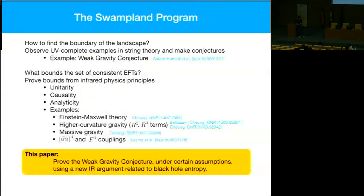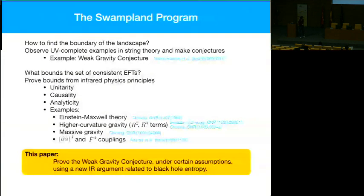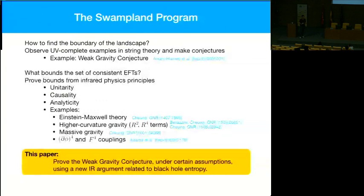It's an interesting question whether the IR and UV approaches ever give the same results — that is, whether the swampland bounds can ever be seen directly from the infrared. I'll argue that's sometimes the case. I won't talk about the unitarity approach, because extra assumptions built in when you add massive higher spin states require strong assumptions about the Lorentz structure of the UV completion that are often not true in example completions. The argument I'll give today is actually much more general and will give the generalized form of the weak gravity conjecture for arbitrary numbers of U1s.